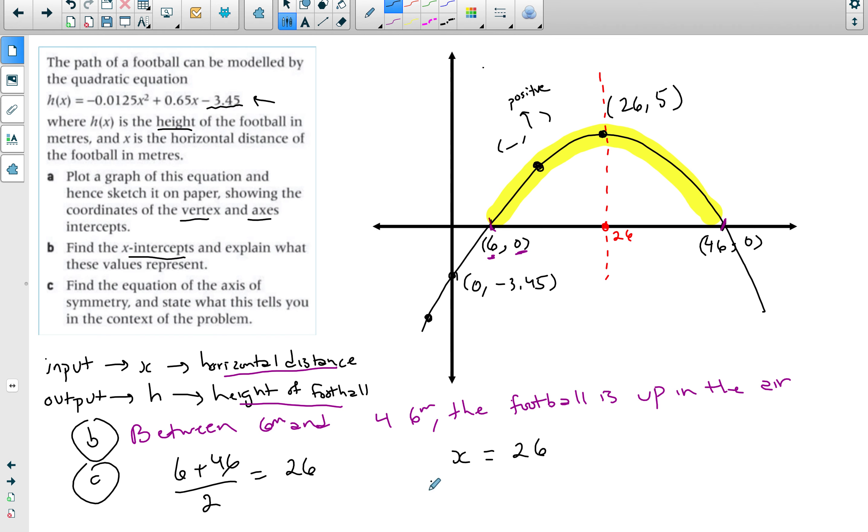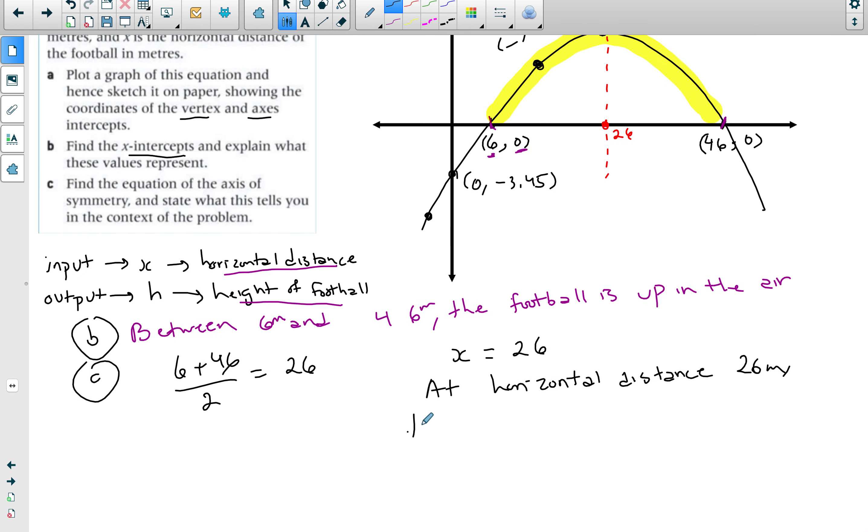At a horizontal distance of 26 meters, the football reaches a maximum height. Sometimes it's a minimum but it's a maximum for this question. Notice that I interpreted this is my input and this is my output. So at this input my output is at a maximum. So that's how you interpret the question.